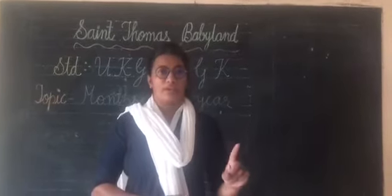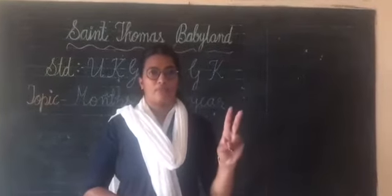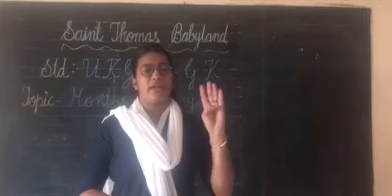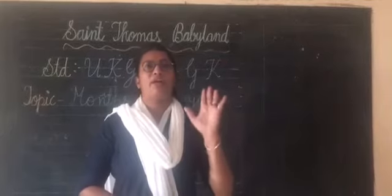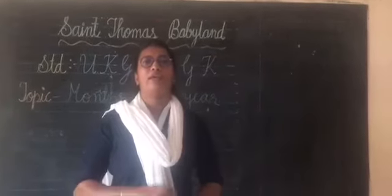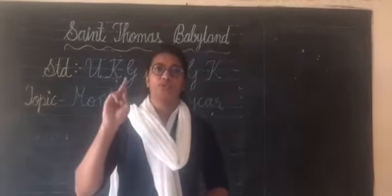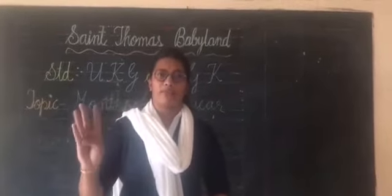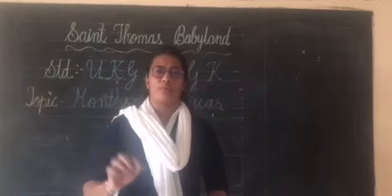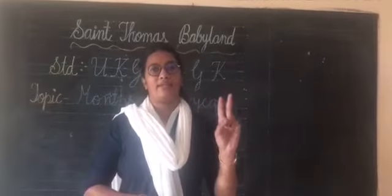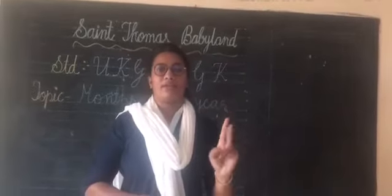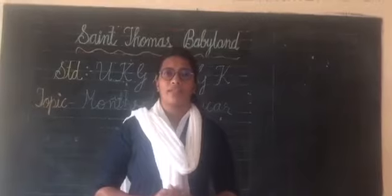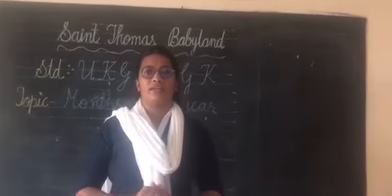January, February, March, April, May, June, July, August, September, October, November and December. There are twelve months in a year.